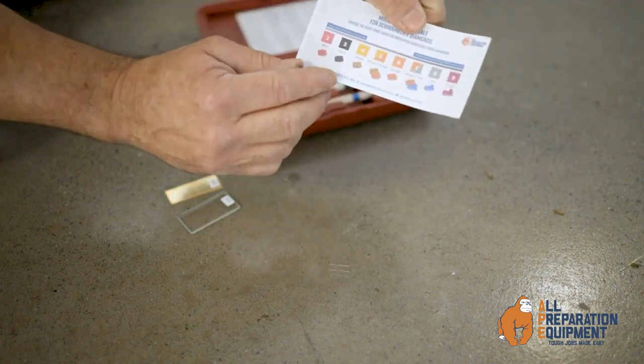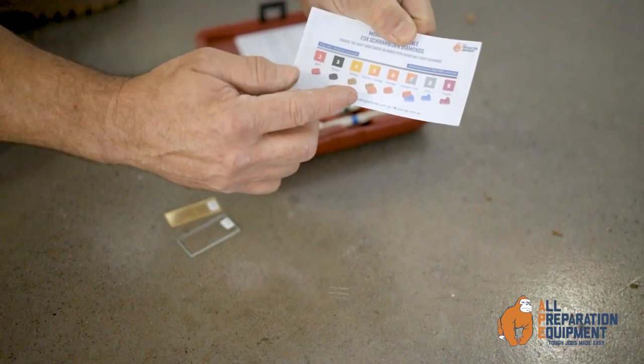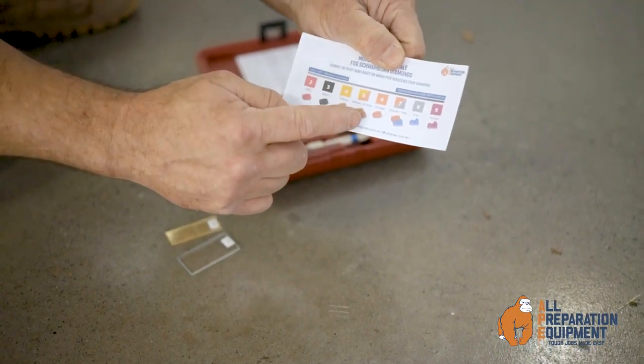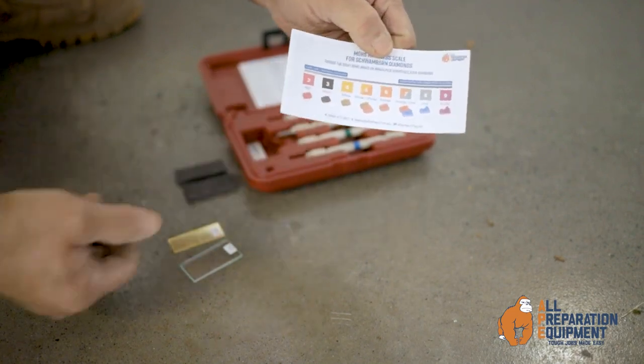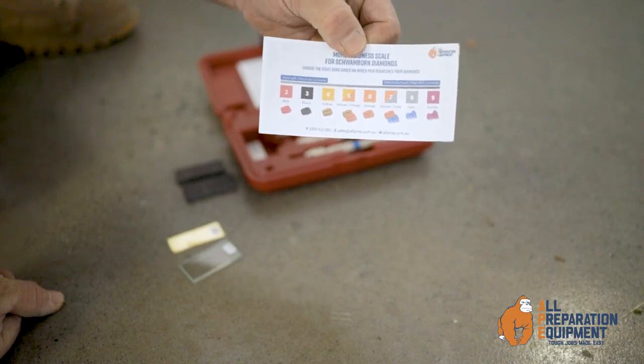If I refer back to my color chart here, I can look at the color scheme for the Schwamborn diamonds and know that if I select a yellow, which is between orange and black being a four, it's going to be a very close match for the application of what we're trying to do, which is to open up this concrete.